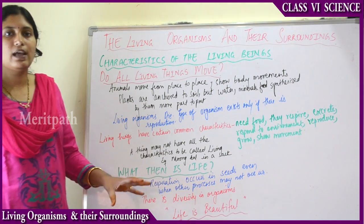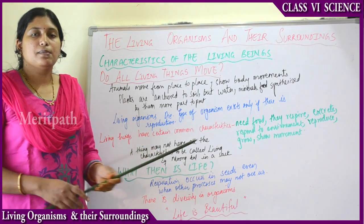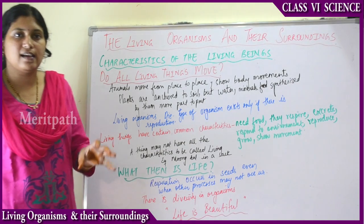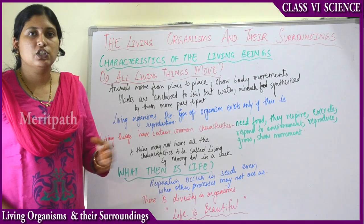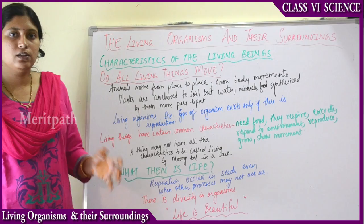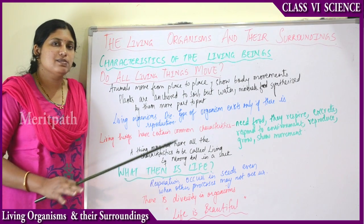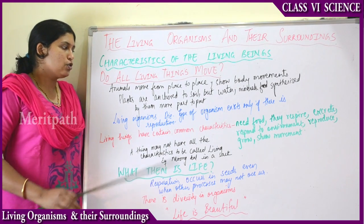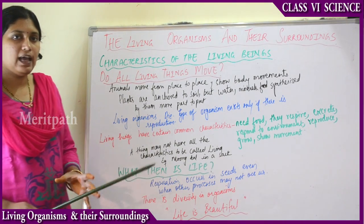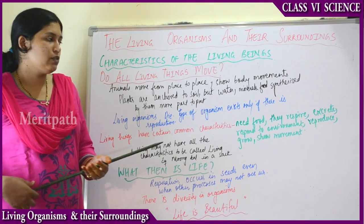Living organisms also die, whereas non-living organisms do not die. A type of organism exists only if there is reproduction — if a species is dying without reproducing, that species will become extinct. Only if there is reproduction will the species continue. So living organisms have certain features which make them different from non-living things.